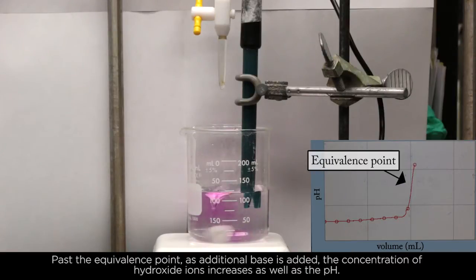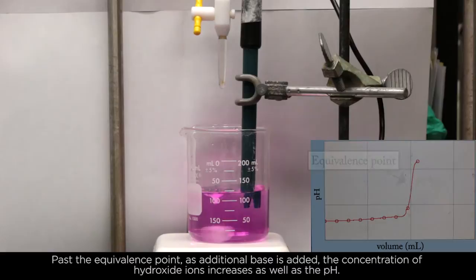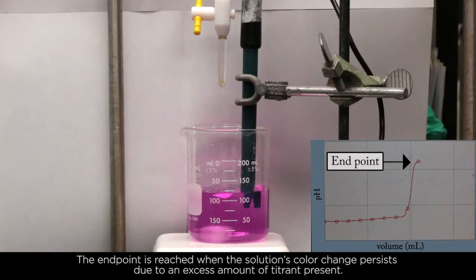Past the equivalence point, as additional base is added, the concentration of hydroxide ions increases as well as the pH. The endpoint is reached when the solution's color change persists due to an excess amount of titrant present.